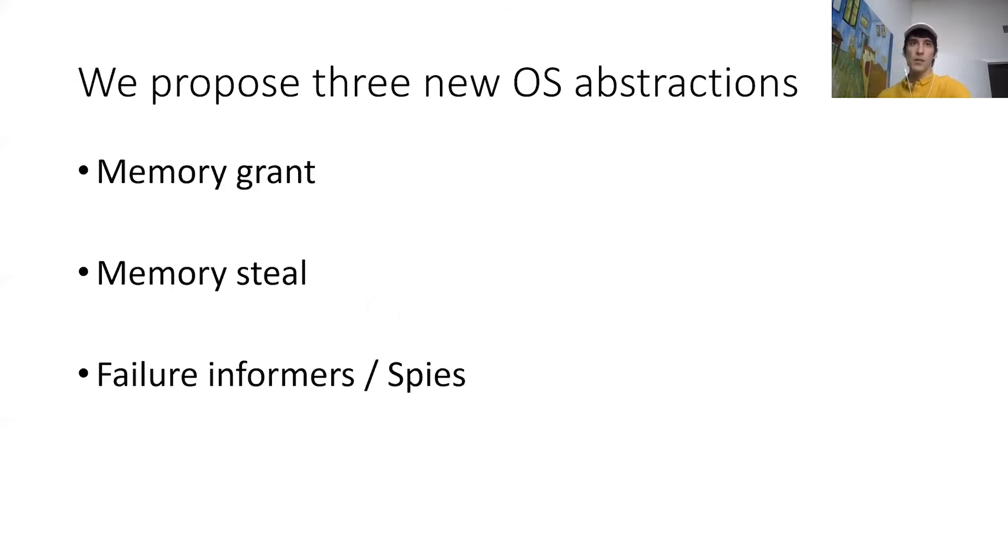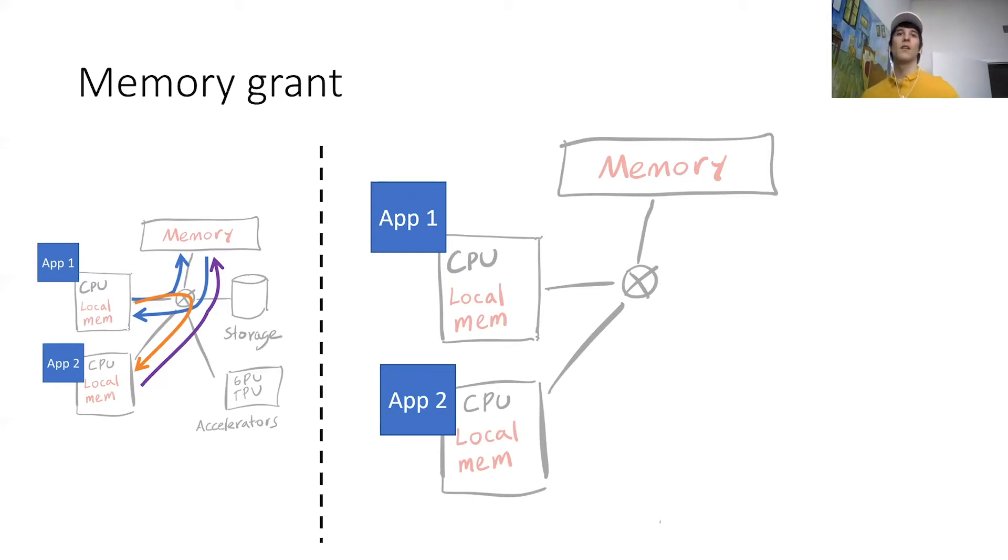So our proposal is going to consist of three operating system abstractions, and these are not meant to be exhaustive, just some abstractions that we thought might be useful. The first one we call a memory grant, which is essentially a way for one process to move data to another process more cheaply. So recall our prior example where app1 wanted to send data to app2, and this ended up resulting in a bunch of data movement. I have that example here on the left. With a memory grant, which I'm going to depict here on the right, what app1 could do instead is it could just yield control over some of its memory pages to app2.